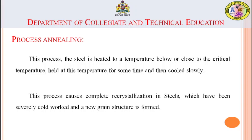Due to mechanical operations, the internal structures of the steel have been changed. Process annealing forms a new grain structure in the part. The process involves heating below the critical temperature, allowing it to cool, and achieving complete recrystallization in the steel.